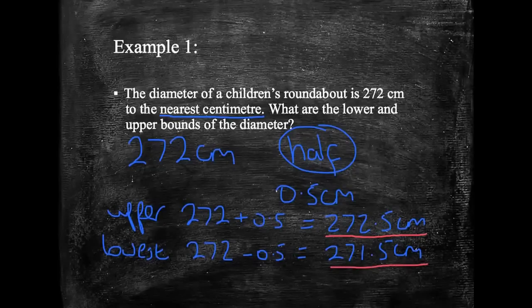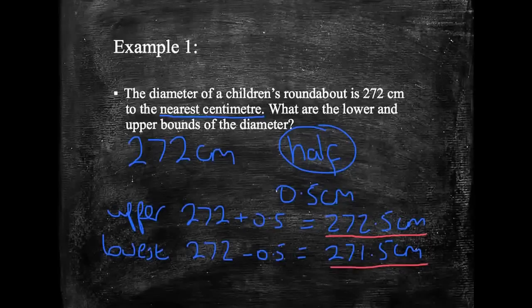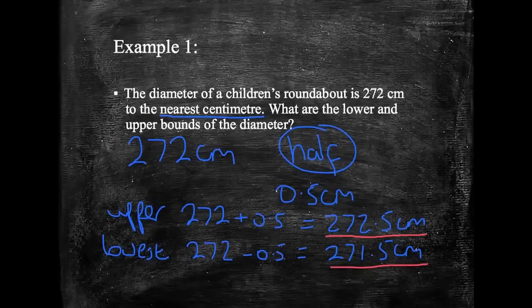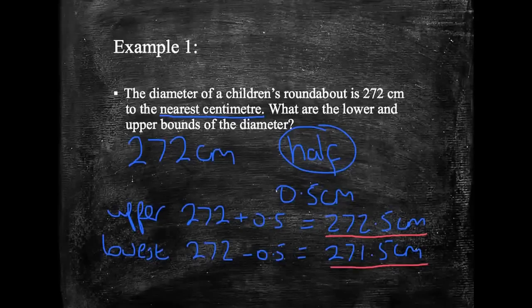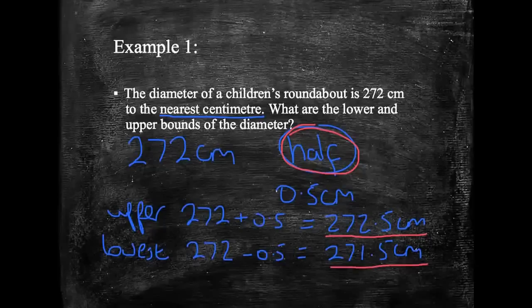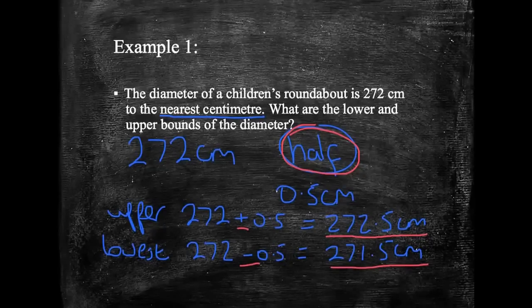Now, I know that sometimes when we're doing this topic, it looks like there's more to it. It looks like we should be looking at 272.4999, or some other kind of rounding, but we don't need to worry about it. We just half what it's been rounded to and add or take, depending if we're trying to find the upper, or the lowest, or the lower bound.